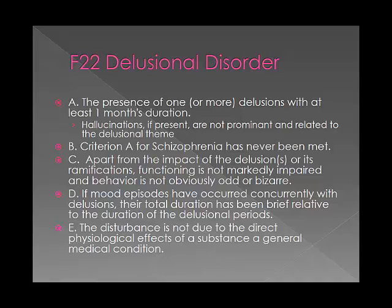If I'm going to diagnose someone with delusional disorder, I have to go through all of the lettered criteria. Criterion A says there must be the presence of one or more delusions with at least one month's duration. You need to think about how long this has been going on and whether it actually meets criteria. Delusional disorder is very specific — hallucinations are not prominent, and the person must not have met criteria for schizophrenia within that year. Delusional disorder is really about the delusions as the main feature.